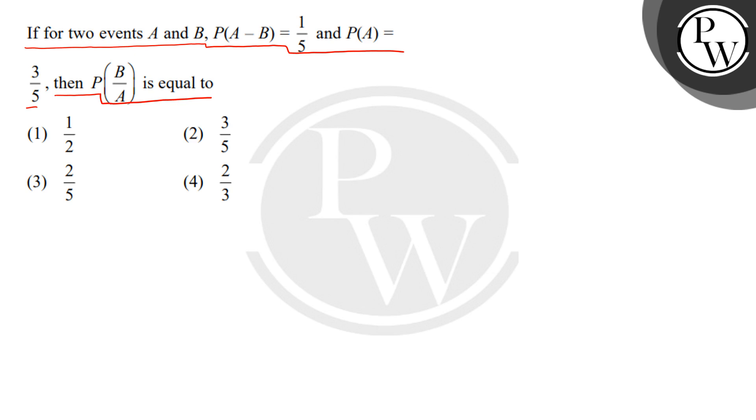Okay, so first of all, the probability of A minus B which we have given is 1 upon 5. You should know that probability of A minus B is the probability of A minus probability of A intersection B.